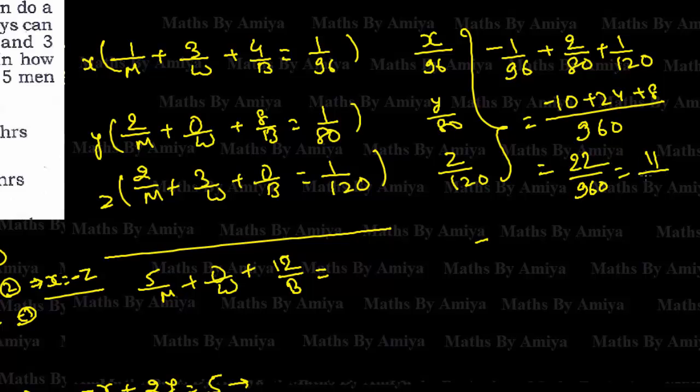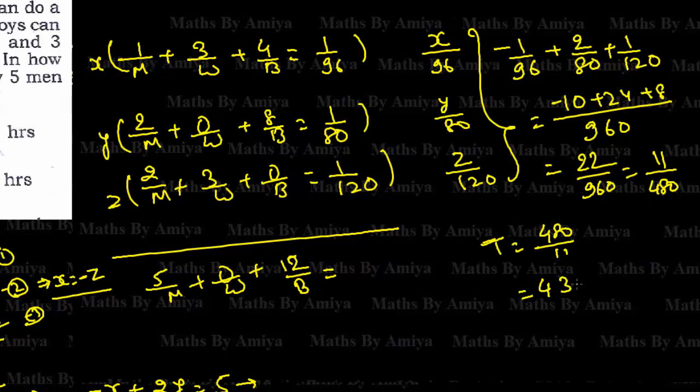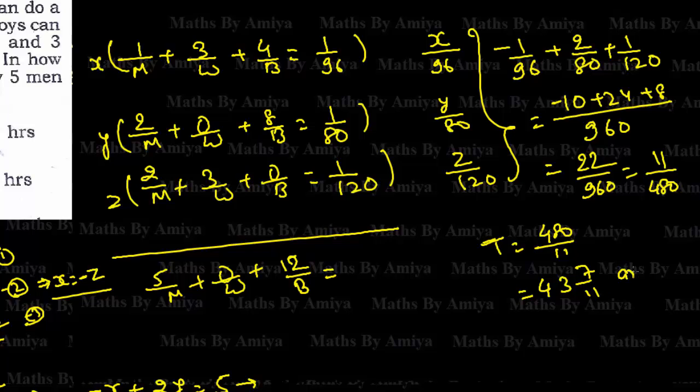So we have 11 upon... So time is nothing but 480 upon 11. This is nothing but 43, 7 by 11. And this is our answer.